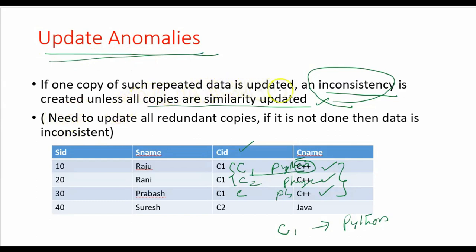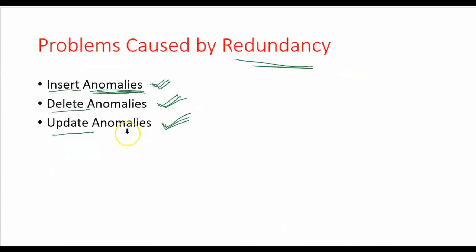Once again, if one copy of such repeated data is updated - like this one copy - an inconsistency is created. I only changed one copy, but there are many other copies, so it leads to inconsistency unless I update all the duplicate records in the database. We need to update all redundant copies; if it is not done, the data is inconsistent. According to these three anomalies, if your database contains redundancy, it leads to problems, and we need to overcome these anomalies.